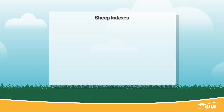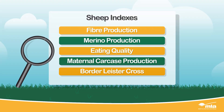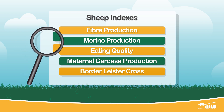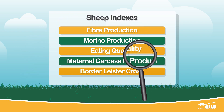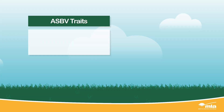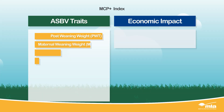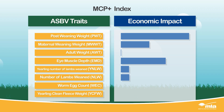There are a variety of indexes based on the major sheep production systems in Australia, and they'll guide you in the direction you need to go. But it's still important to look at the traits chosen by the index to make sure they align with your breeding objective and that you have a balance of traits you're comfortable with.